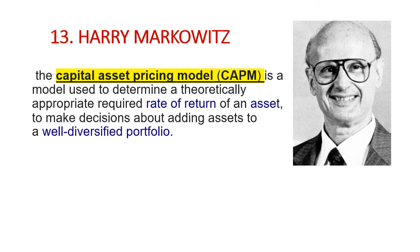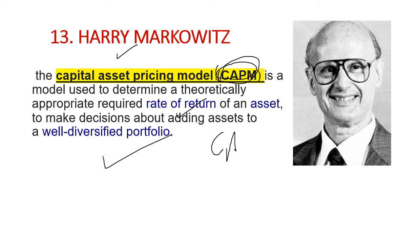The 13th theory is the Capital Asset Pricing Model — CAPM (C-A-P-M). This theory was given to us by Harry Markowitz. The Capital Asset Pricing Model is a model used to determine a theoretically appropriate required rate of return of an asset, to make decisions about adding assets to a well-diversified portfolio. You should remember: the CAPM theory was developed by Harry Markowitz.